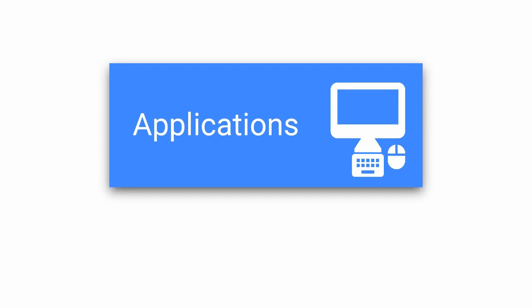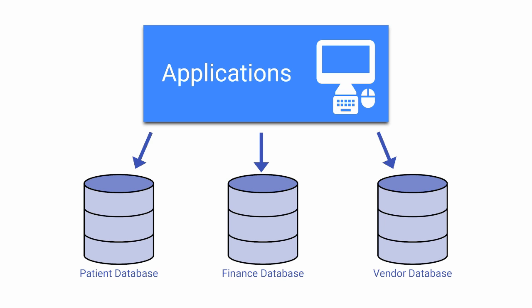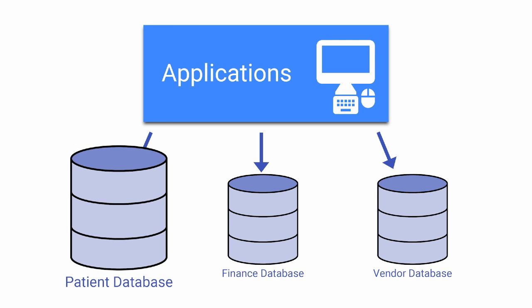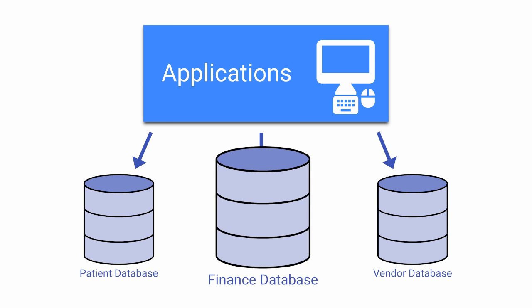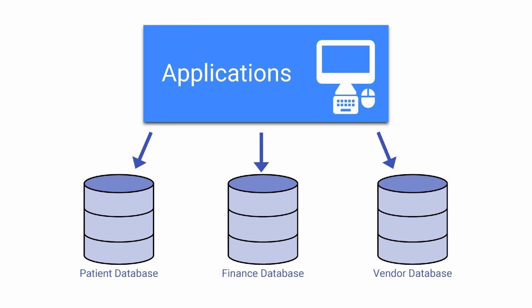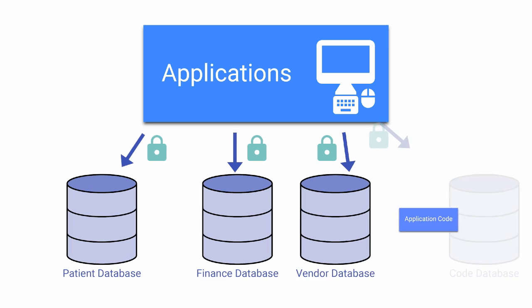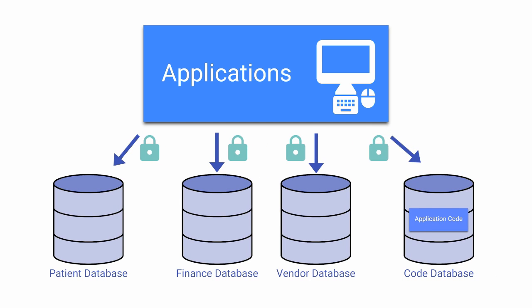Cache stores data in physical files called databases. Applications typically use multiple databases for grouping — for example, keeping patient demographics separate from finances — or for security purposes, such as granting access privileges or encrypting sensitive data. Cache also stores application code in databases, either together with or separate from the data.